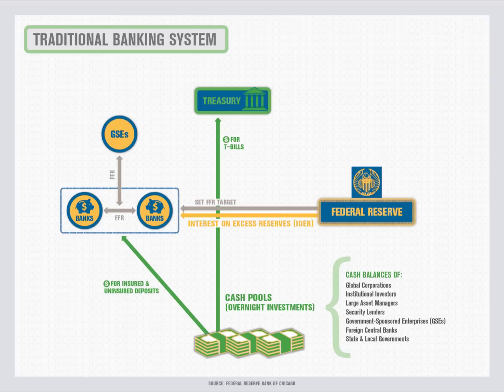Banks that can earn a risk-free rate by holding reserves at the Fed should have no incentive to lend excess reserves in the federal funds market at rates below the IOER. But IOER has not served as a firm floor on the rate at which all institutions are willing to lend federal funds. One of the main reasons is that institutions such as the GSEs do not earn IOER and therefore have an incentive to lend extra reserves at rates below the IOER, because a small positive rate is better than nothing.